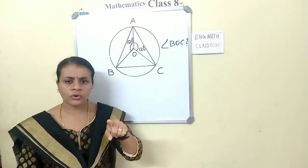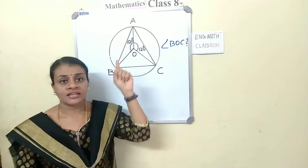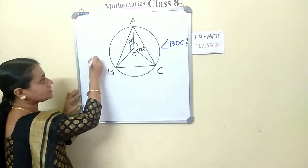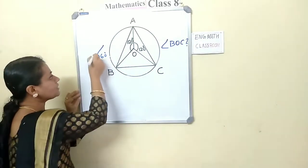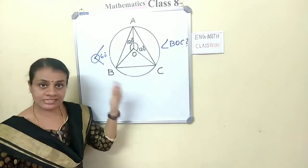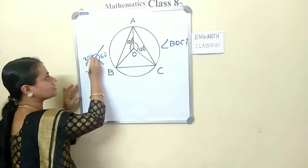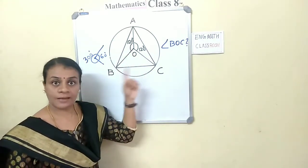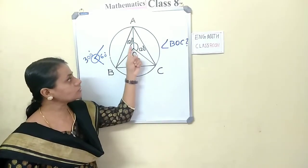Now, can you find angle BOC? Do you know about angles around a point? Yes — angles around a point add up to 360 degrees. For example, if one angle is 60 degrees, the remaining angle is 360 minus 60, which is 300 degrees. So here, angle BOC equals 360 minus (120 plus 120).